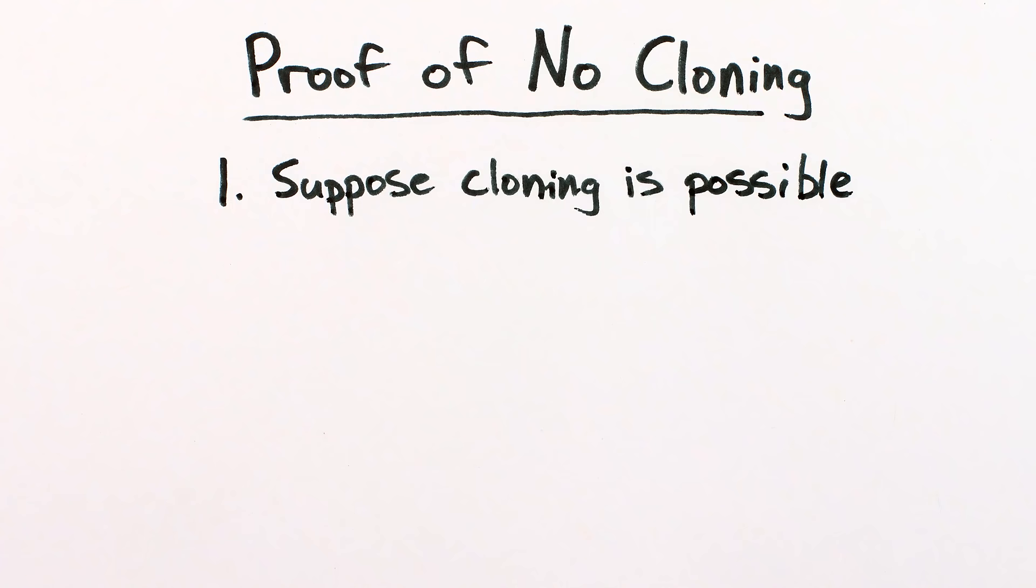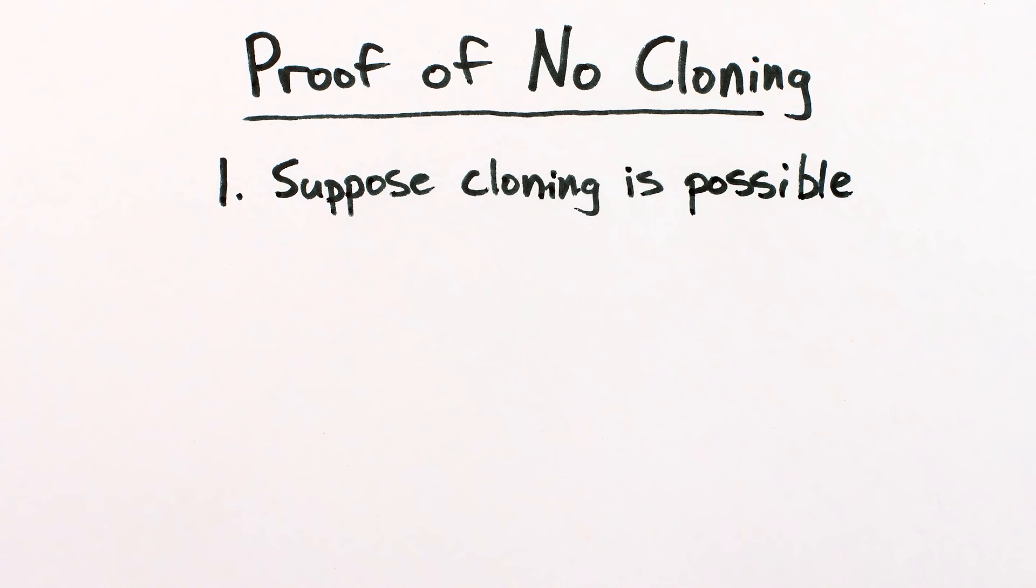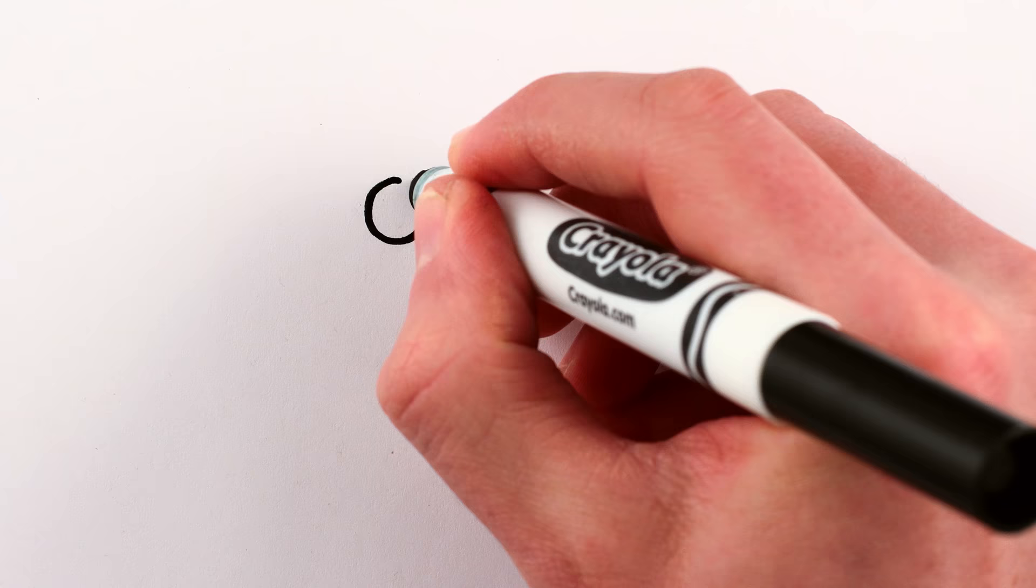Okay, back to cloning. So to summarize the proof of the no-cloning theorem, we first suppose cloning is possible, then show that such cloning would logically result in the contradiction that a cloned whole would not be the same as the sum of its cloned parts, and hence perfect cloning is not possible.